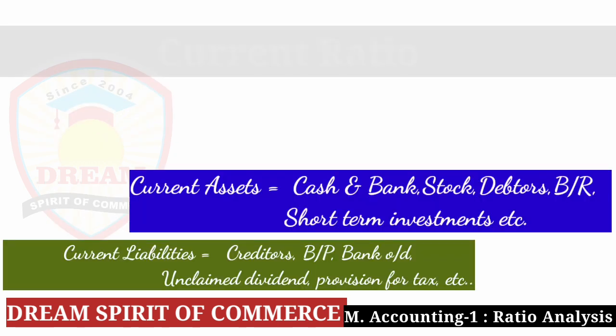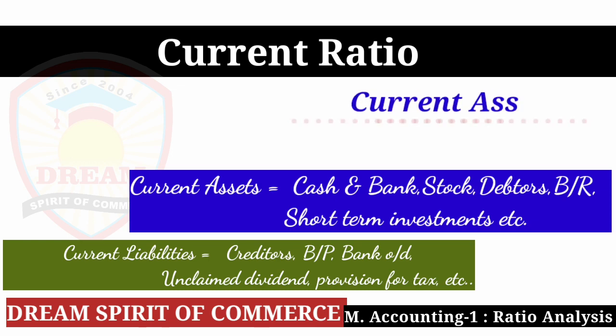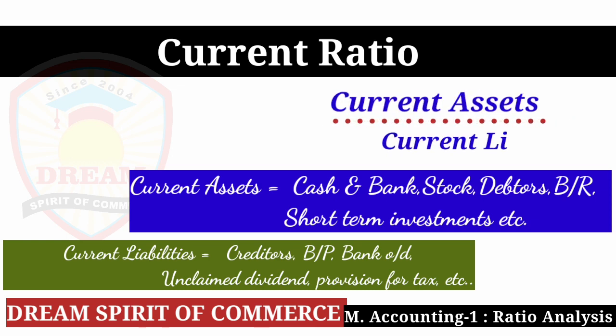Next ratio is Current Ratio. Current Ratio equals Current Assets divided by Current Liabilities. Current assets include: cash and bank, stock, debtors, bills receivable, short-term investment. Current liabilities include: creditors, bills payable, bank overdraft, unclaimed dividend, provision for tax — these are the liabilities to be taken as current liabilities.